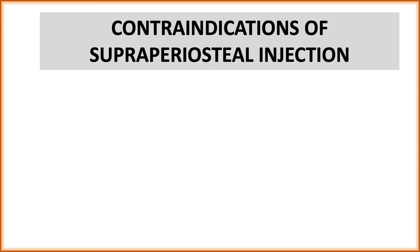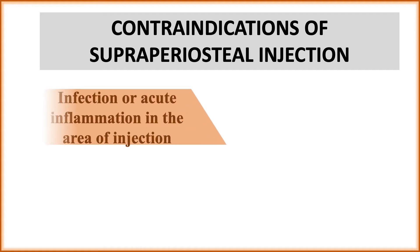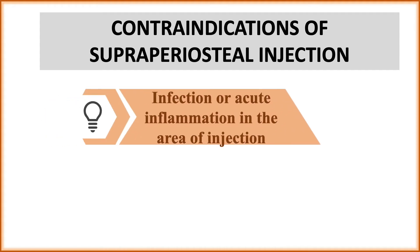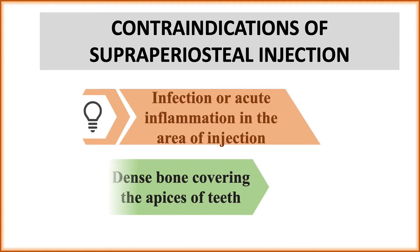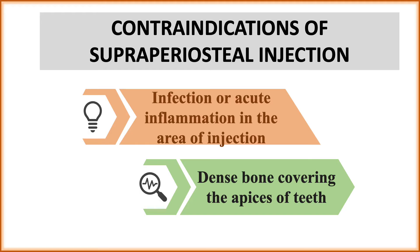The contraindications of supraperiosteal or local infiltration injection technique include: cases of infection or acute inflammation in the area of injection, and cases of dense bone covering the apices of teeth — especially in the mandibular bone — where local infiltration will not work.